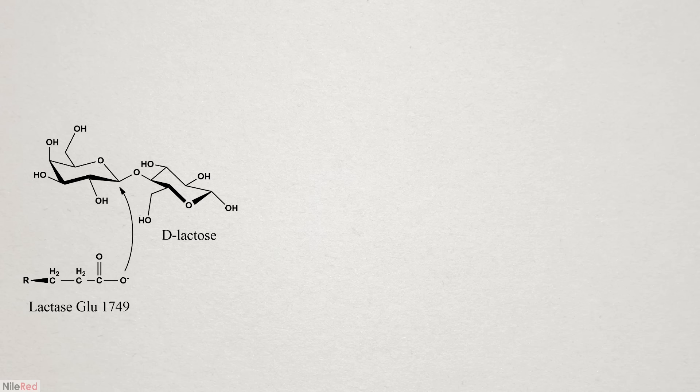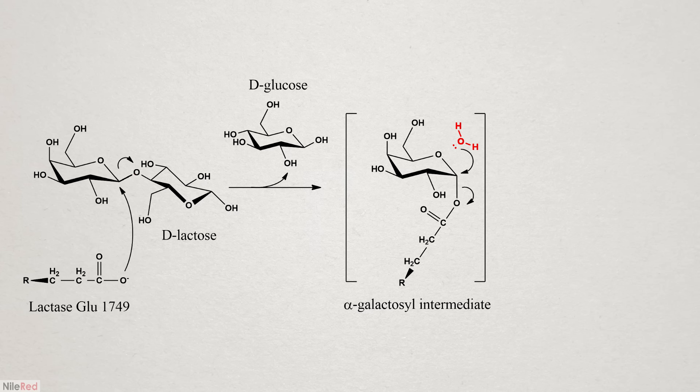When a molecule of lactose enters the active site of the enzyme, it gets attacked by an amino acid called glutamate. This breaks the glycosidic bond between the two sugars, and the glucose is kicked off. The galactose unit that stayed bound to the enzyme is then attacked by a water molecule, which releases the galactose and regenerates the enzyme.